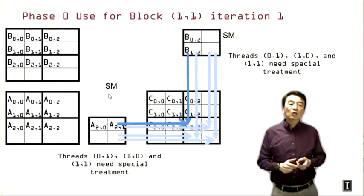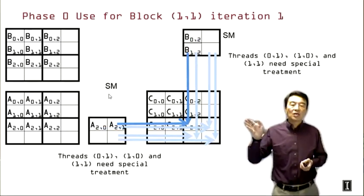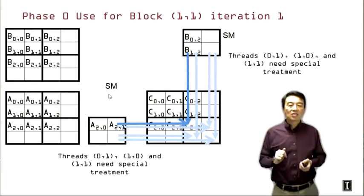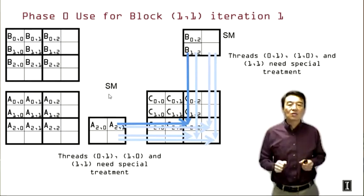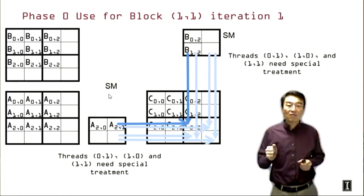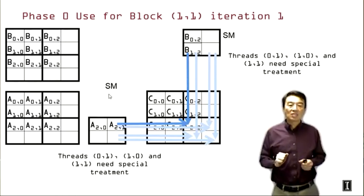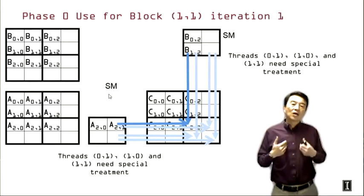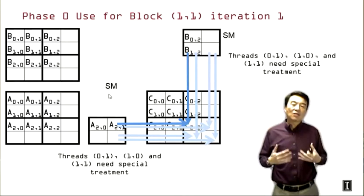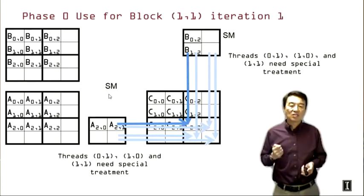In iteration one, we have a similar situation, but remember in block 0,0, all the threads were using invalid values. But in this case, one of the threads, thread 0,0, is actually using valid values and calculating a required step for the C element C2,2. So it's not that we can just limit the number of iterations for all the threads and avoid doing some of the invalid calculation. We really need to have a more systematic way to handle these problems.